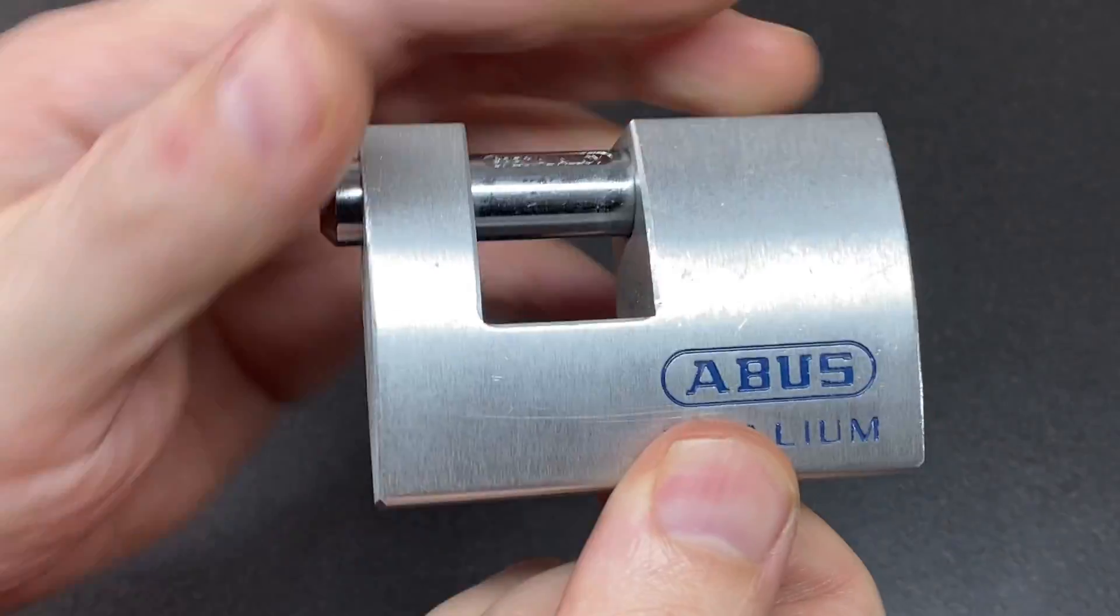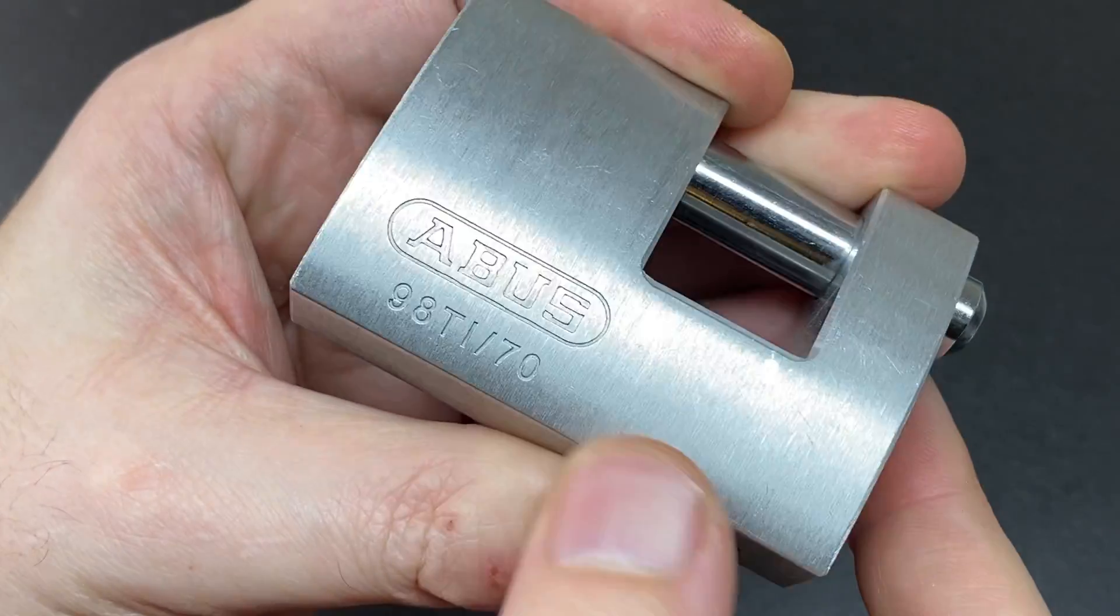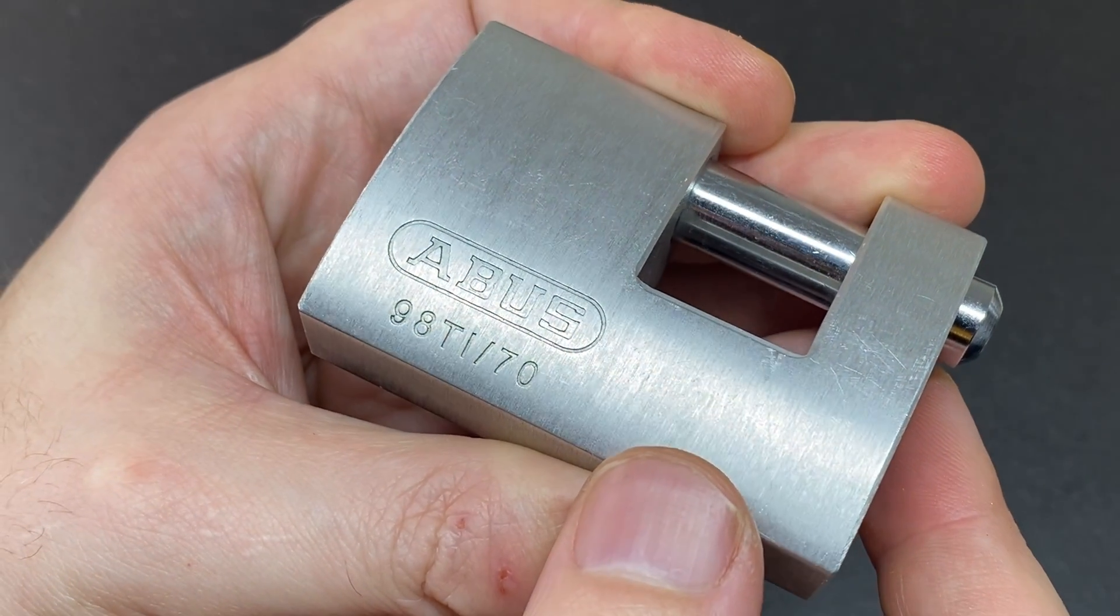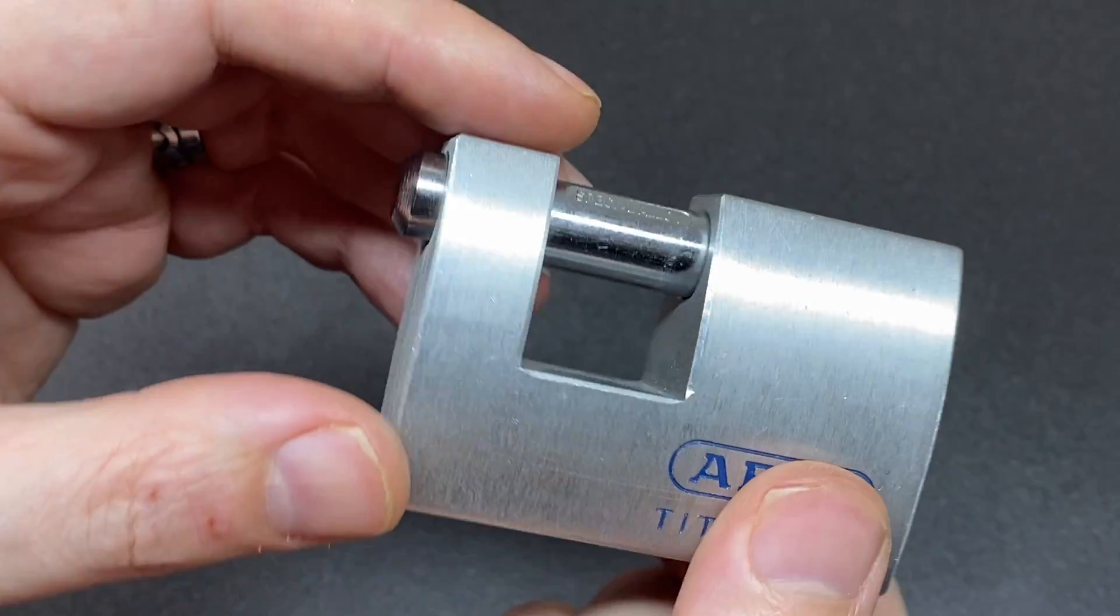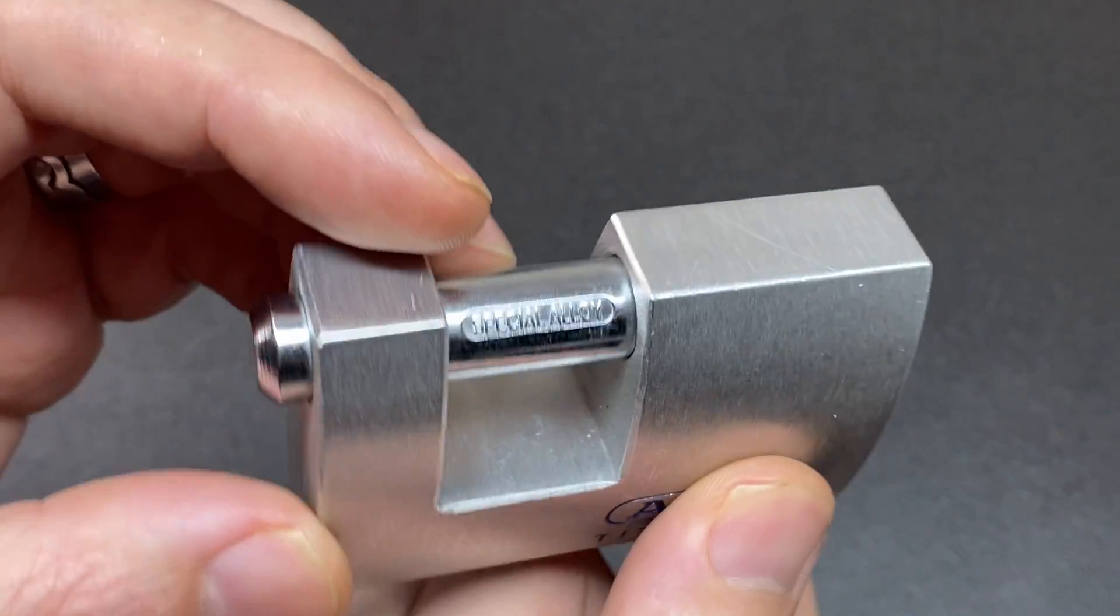Hello again, it's Lock Noob, and here we have an Abus Titalium 98Ti70. It's an aluminum bodied shutter lock, not super high security, but not too low security anyway.